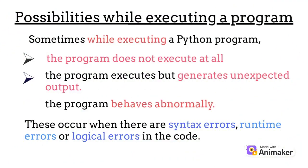What are the possibilities while executing a program? The program can either execute perfectly well, or one of these two situations can happen: either the program does not execute at all, or the program starts to execute but generates unexpected output. Basically, the program can sometimes behave abnormally. These occur when there are syntax errors, runtime errors, or logical errors in the code.